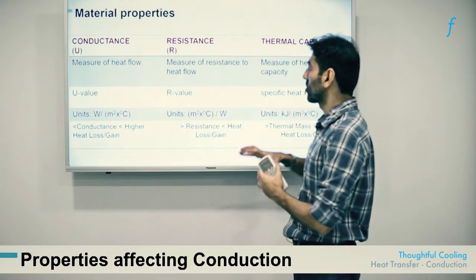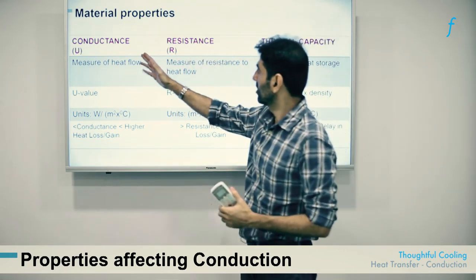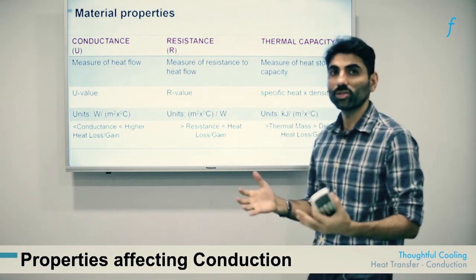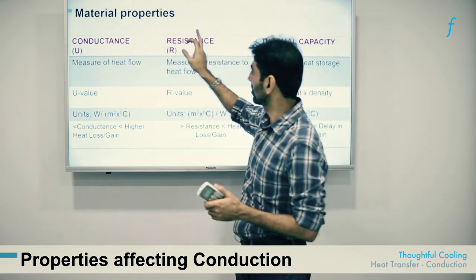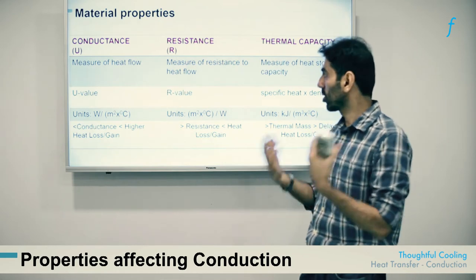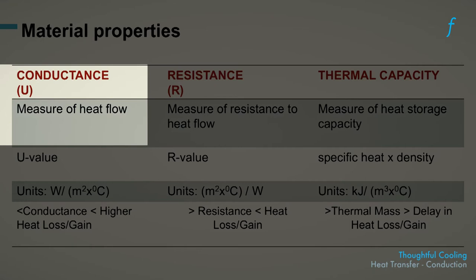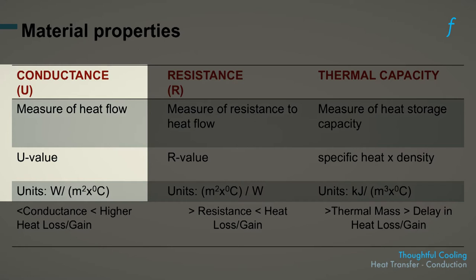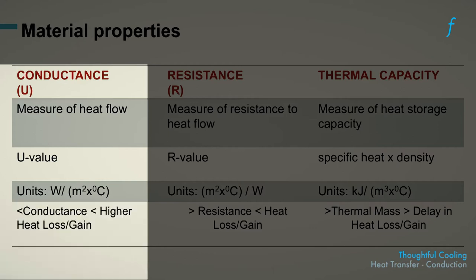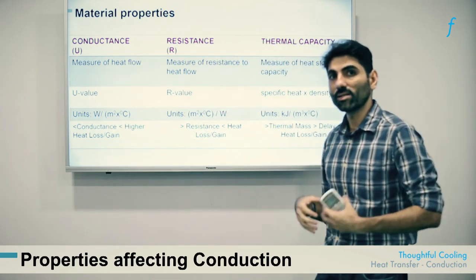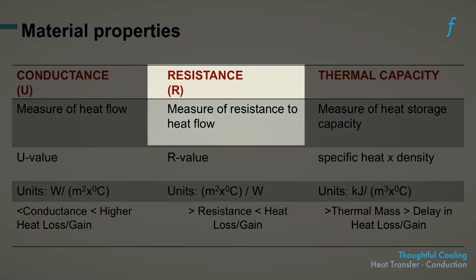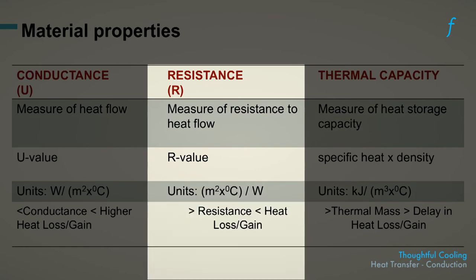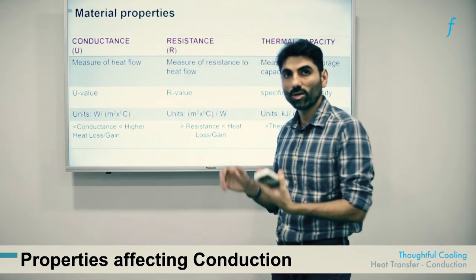To encapsulate and summarize all the thermal properties discussed: conductance, resistance, and thermal capacity all have relations with heat transfer but are distinctively different phenomena. Conductance is the measure of heat flow, signified by the U value with units of watts per meter square degree centigrade — the lower the conductance, the lower the heat gain, which is beneficial for a thoughtfully cooled building. Resistance is the exact inverse of conductance — the greater the resistance, the lesser the heat gain — so the goal is building materials with high resistance to prevent heating up.